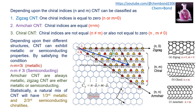For armchair carbon nanotubes, m and n are always equal. For example, (7,7) means a1 is repeated 7 times and a2 is repeated 7 times. When m and n are not equal to each other, we are talking about the chiral carbon nanotube.